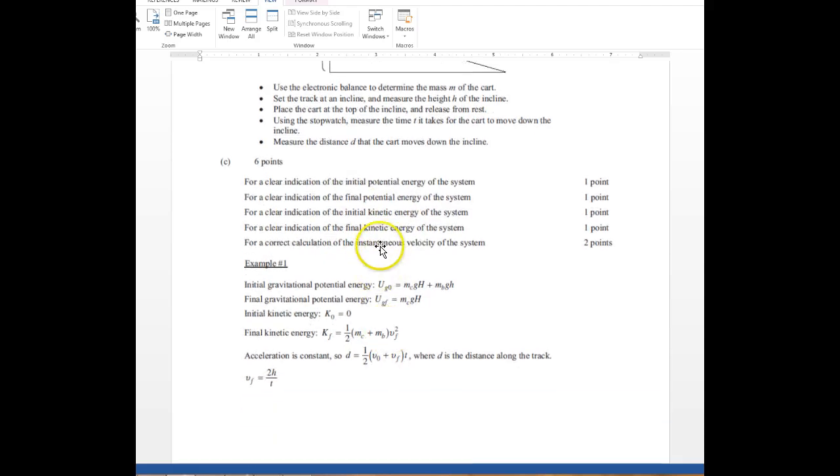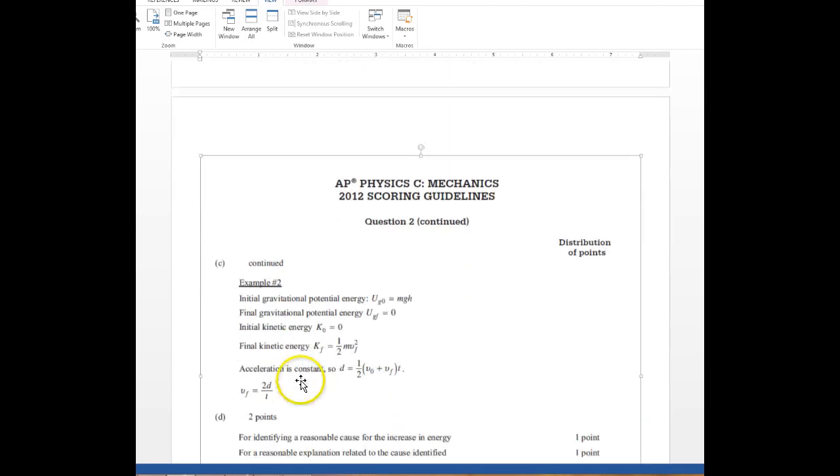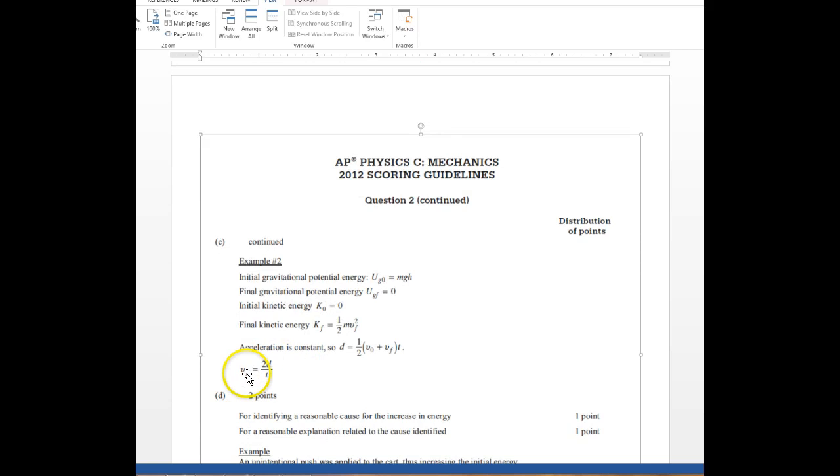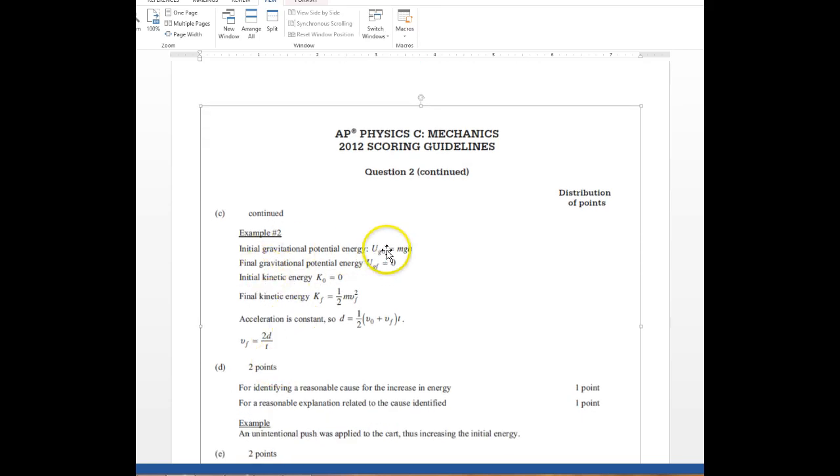Notice that the answer they got, for example 1 and example 2, that we're going to talk about, basically the same equation. So our initial gravitational potential energy here is just the height of that ramp times the mass of the car times gravity. There is no final potential because it's down at the bottom. The initial kinetic is zero, and the final kinetic is just one-half m vf squared.